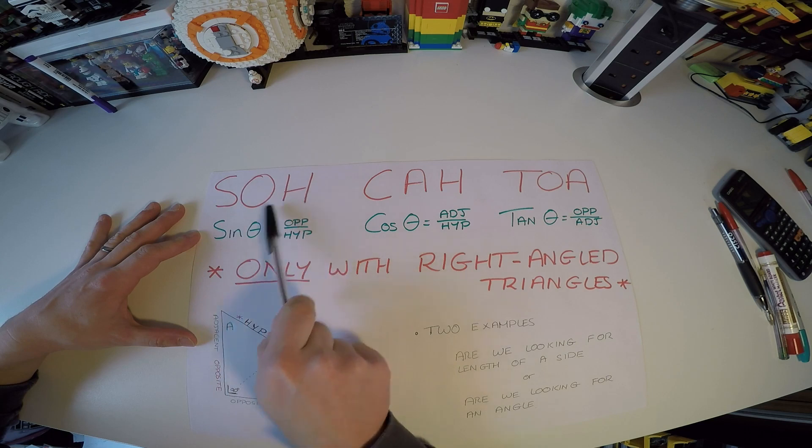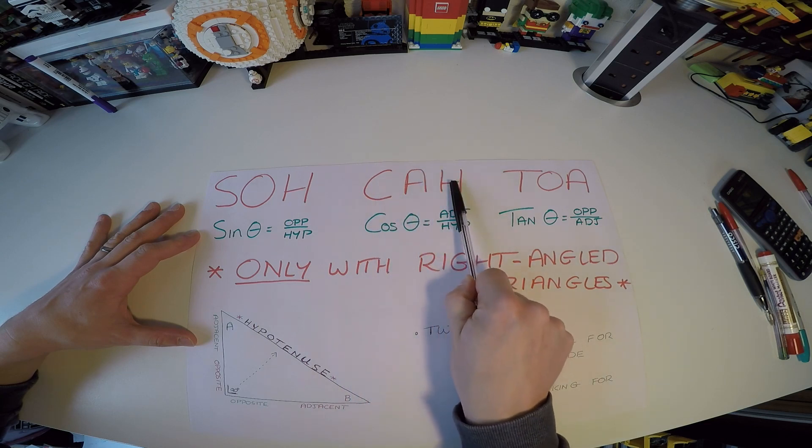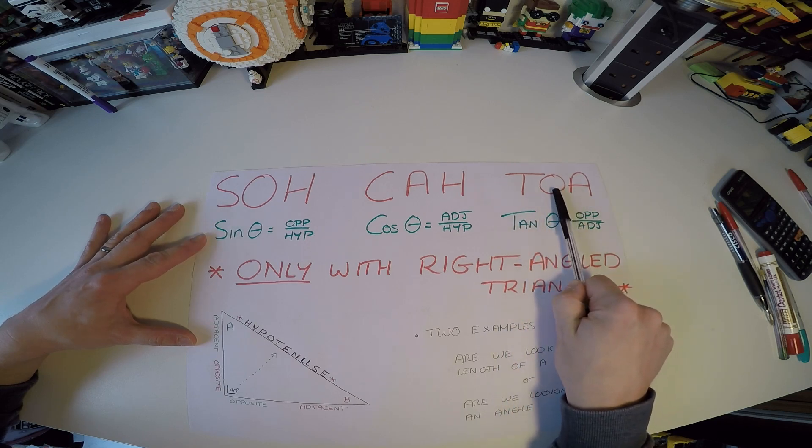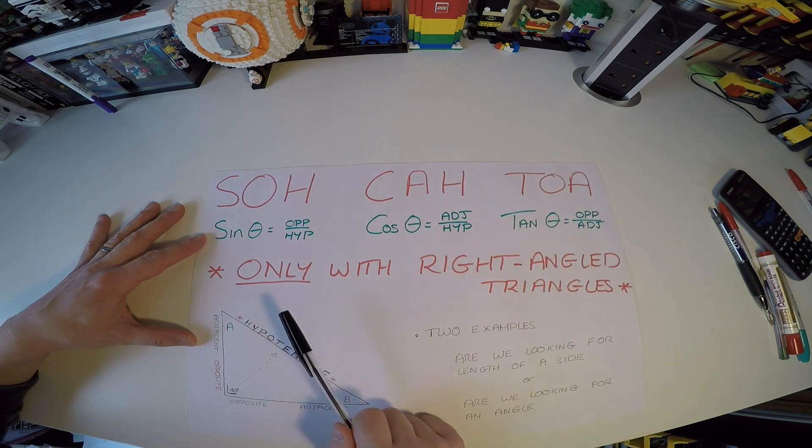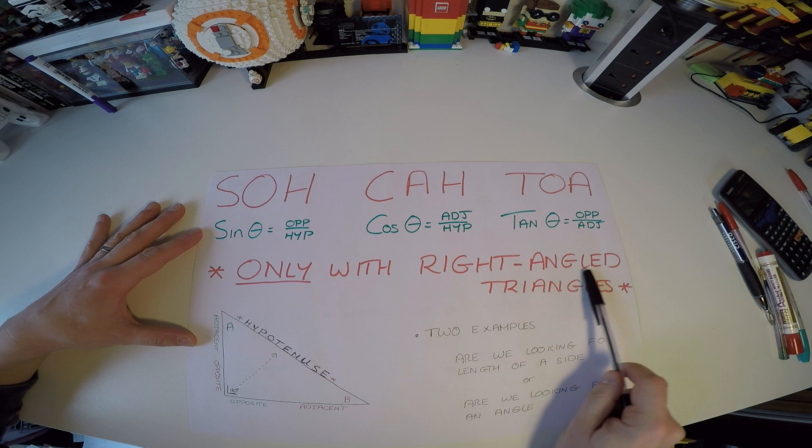Well, SOH means the sine of some angle theta is equal to the opposite over the hypotenuse. Then C for cosine of some angle is equal to the adjacent over hypotenuse. And then T stands for tan, and it stands for the opposite over the adjacent. Now, what's super important here, and you cannot forget this, these formulas only work with right-angled triangles.